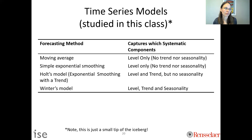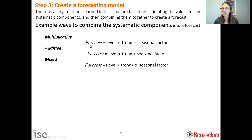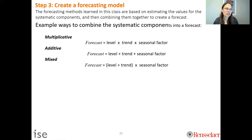These are the forecasting methods we'll study in this class — there are many more beyond them. The key concept is that your historical data must have these components, because our assumption is the past is a good indicator of the future. If the past has a component and you select a model that doesn't include it, you won't forecast that component going forward. Once you've selected a model, you combine these systematic components — through addition, multiplication, or a mix — to produce a forecast.